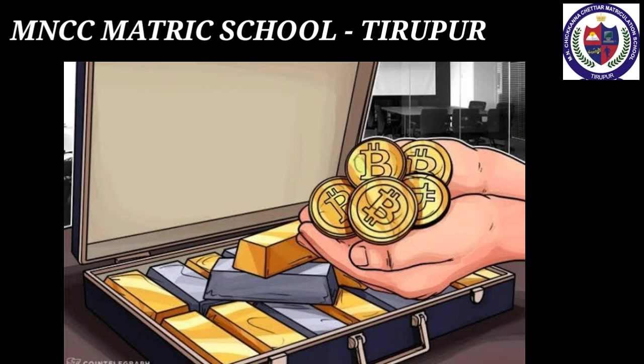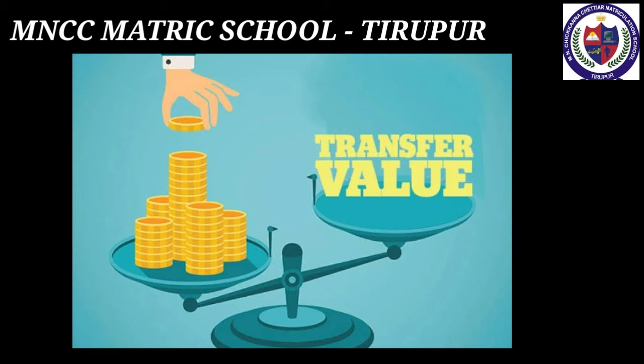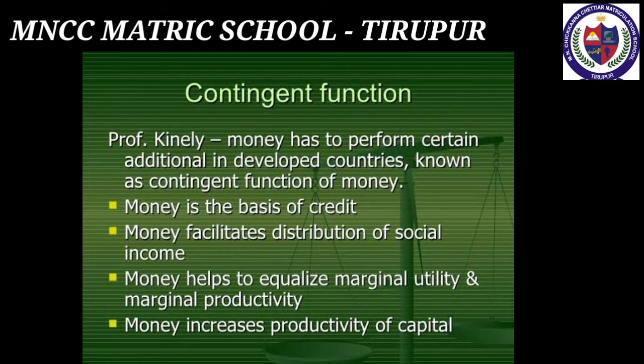As a store of value or store of purchasing power, savings were discouraged under the barter system as goods were perishable, but the introduction of money has helped to save it for the future as it is not perishable. As a transfer of value, money makes the exchange of goods to distant places and abroad possible. Transfer of purchasing power from one place to another is easier nowadays. Contingent functions include basis of credit, increased productivity of capital, and measurement and distribution of national income.